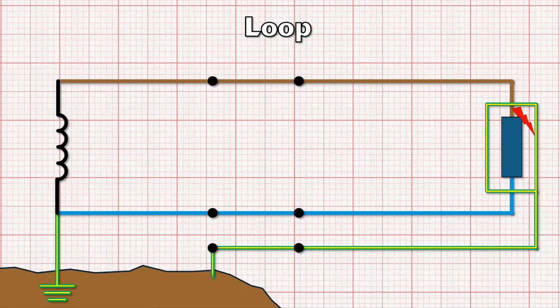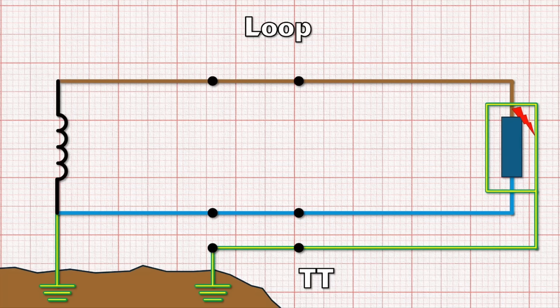This means that if an earth fault occurs in the property, the current that flows is very small because of Ohm's law. High resistance, low current.